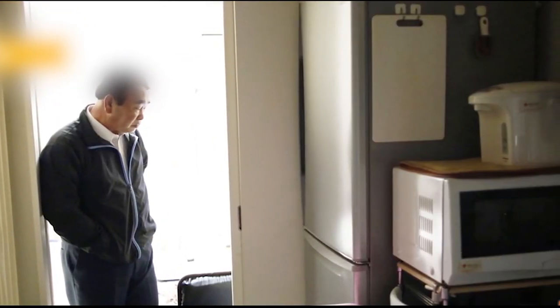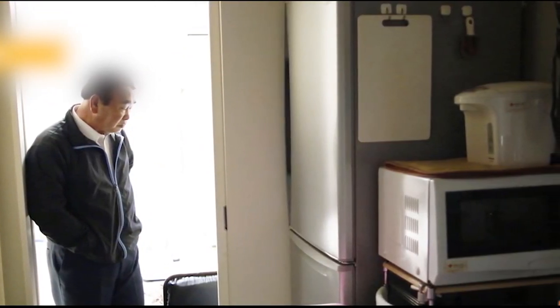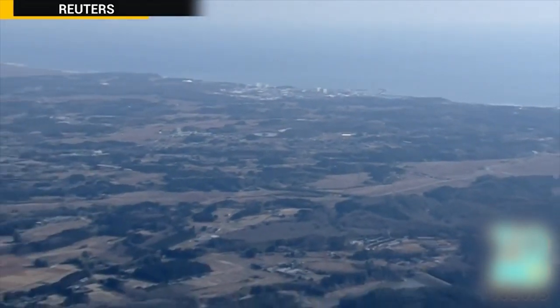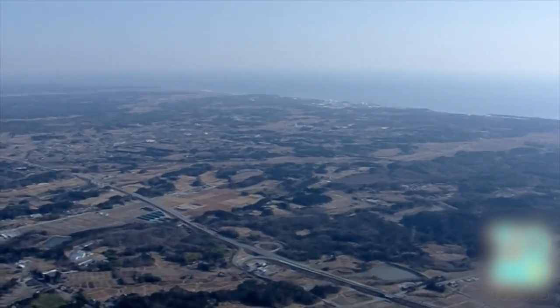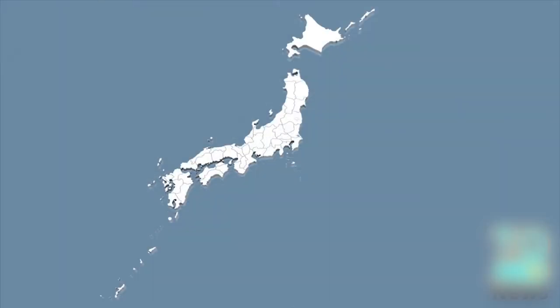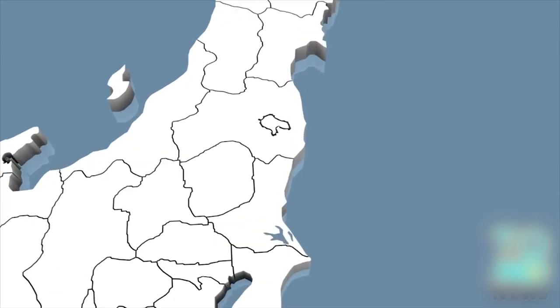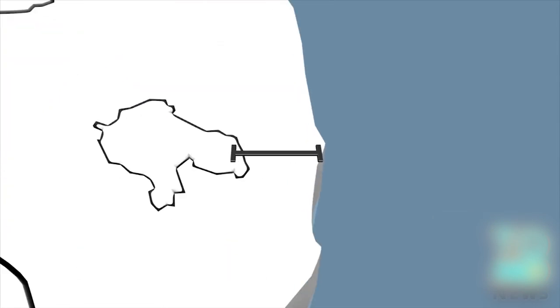Fukushima hot zone residents allowed to return home. For the first time since the March 2011 nuclear disaster, some residents within the radiation hot zone surrounding the Fukushima plant are allowed to return home. A 20km hot zone around the Fukushima nuclear plant has been off-limits for most residents since the government ordered more than 160,000 people to evacuate.